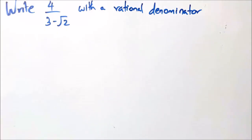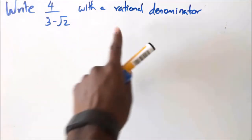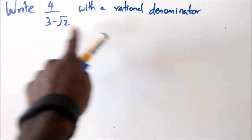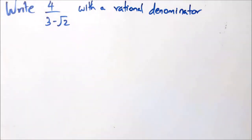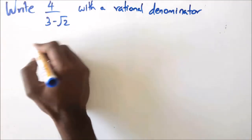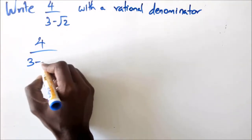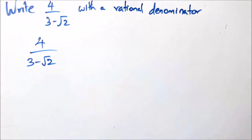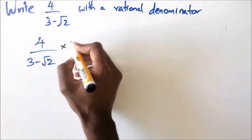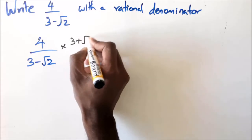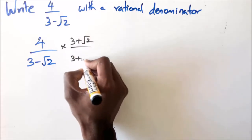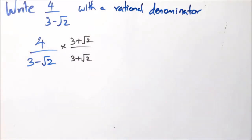With the second question, you've been asked to write this with a rational denominator, which means you want to have a real number in the denominator. To do this you need to multiply by the conjugate opposite. So we have 4 over 3 minus √2, and we multiply by 3 plus √2 over 3 plus √2.